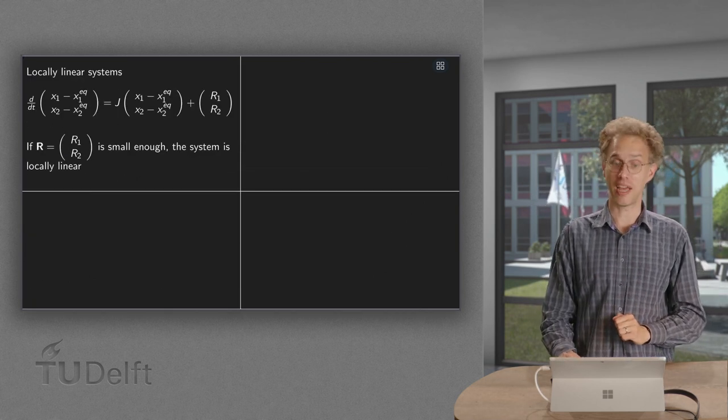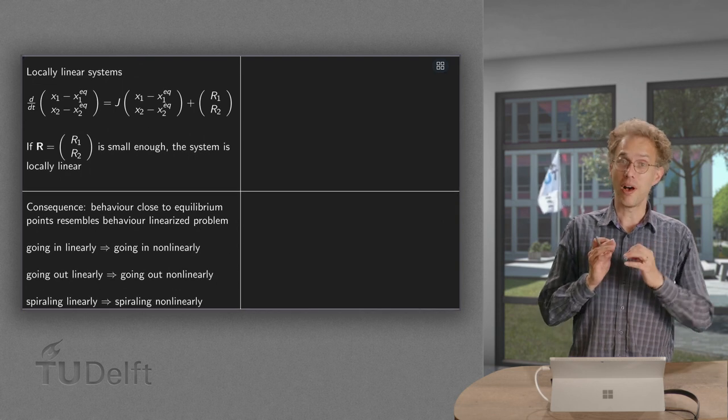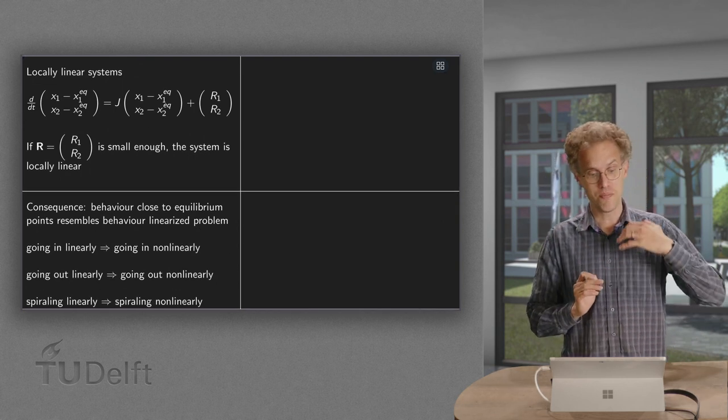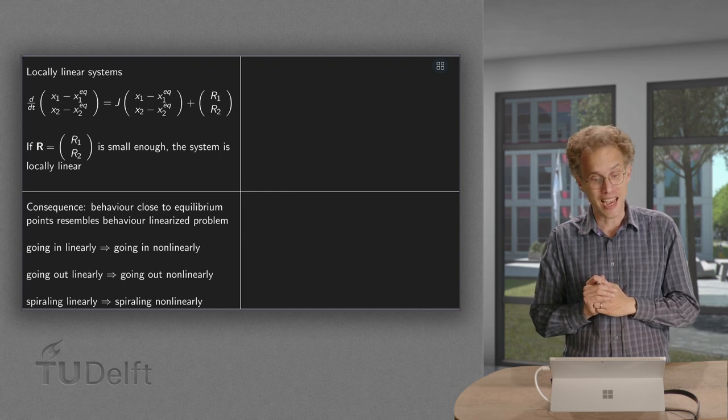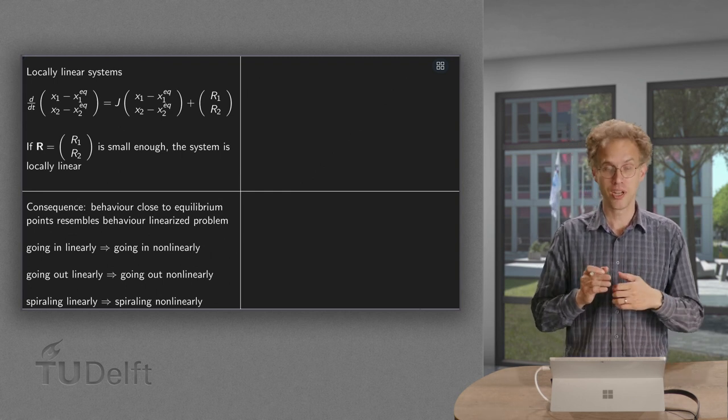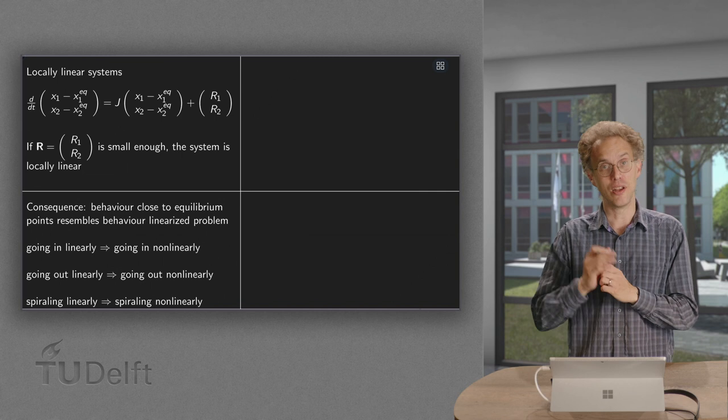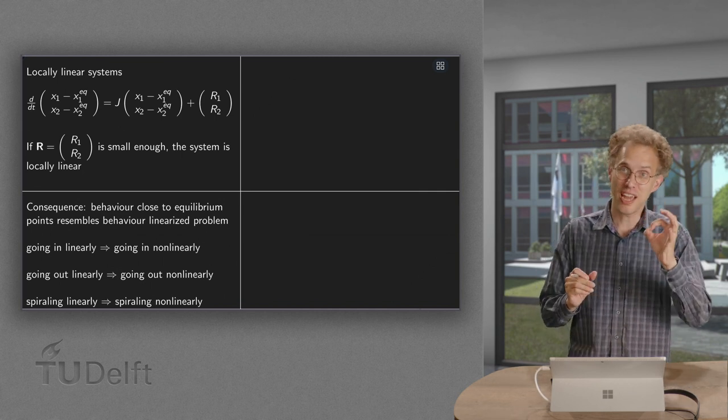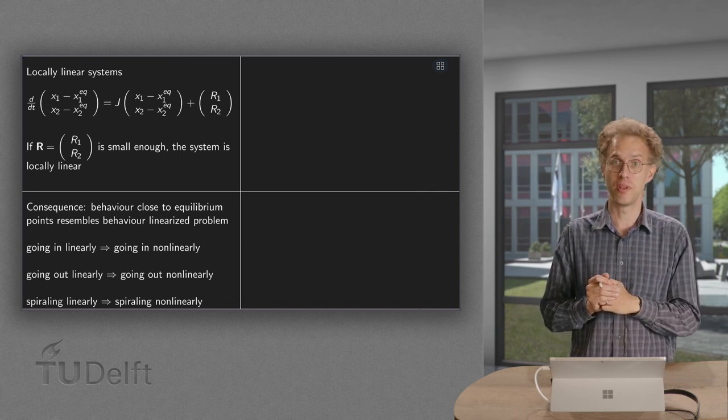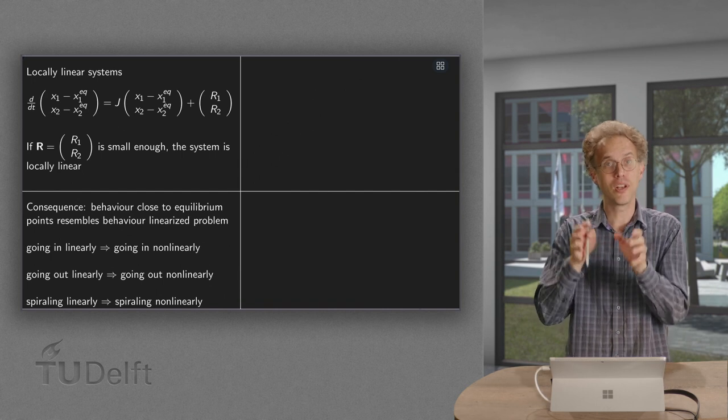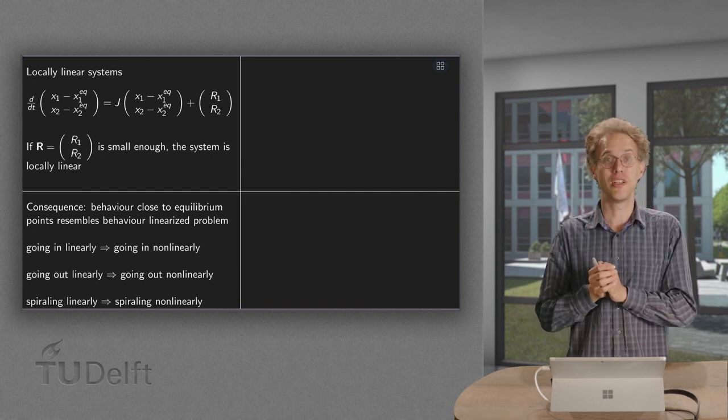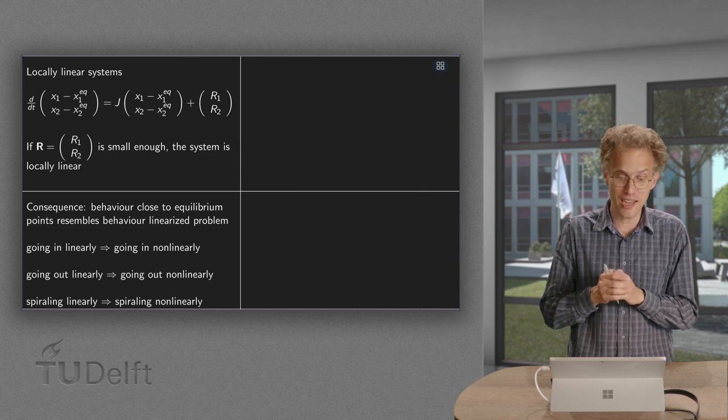So what do we know then? Well, if our system is locally linear, that implies that our equilibrium points behave in the non-linear problem the same as in the linear problem. So what happens non-linearly we can learn by analyzing what happens linearly.